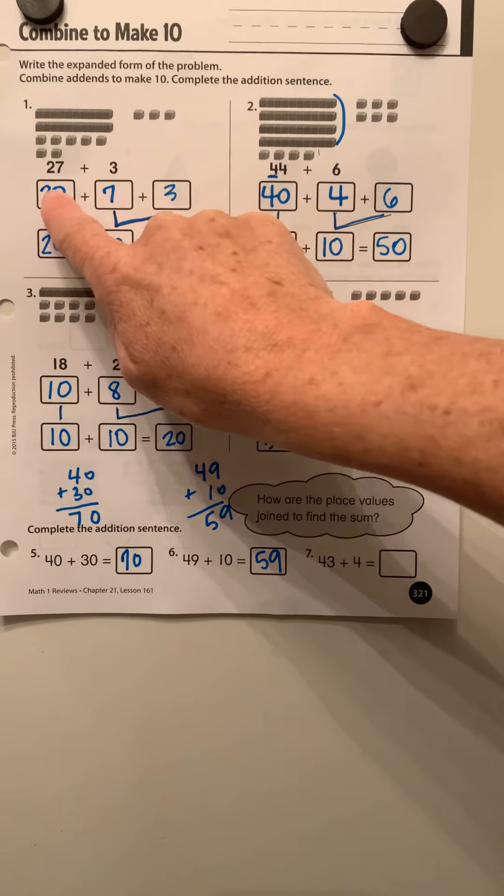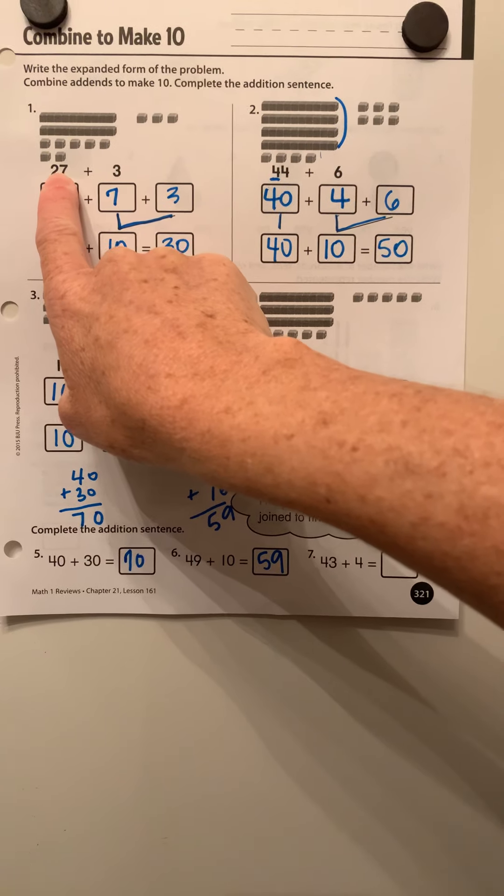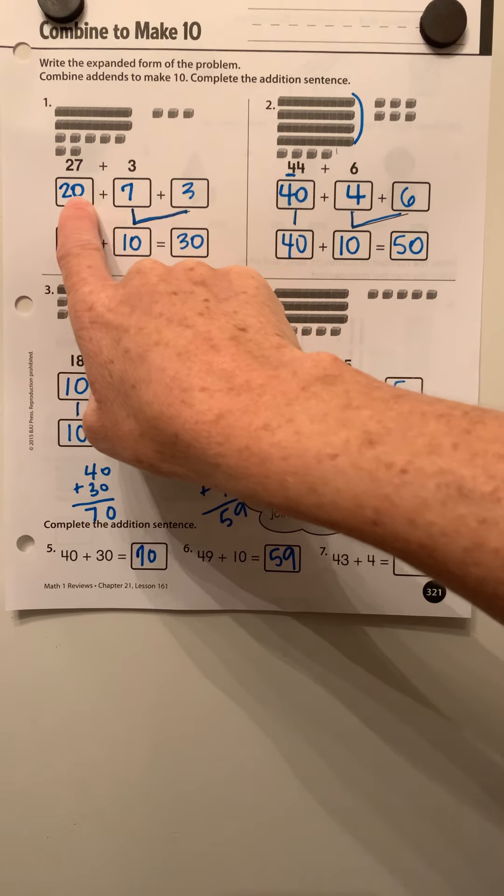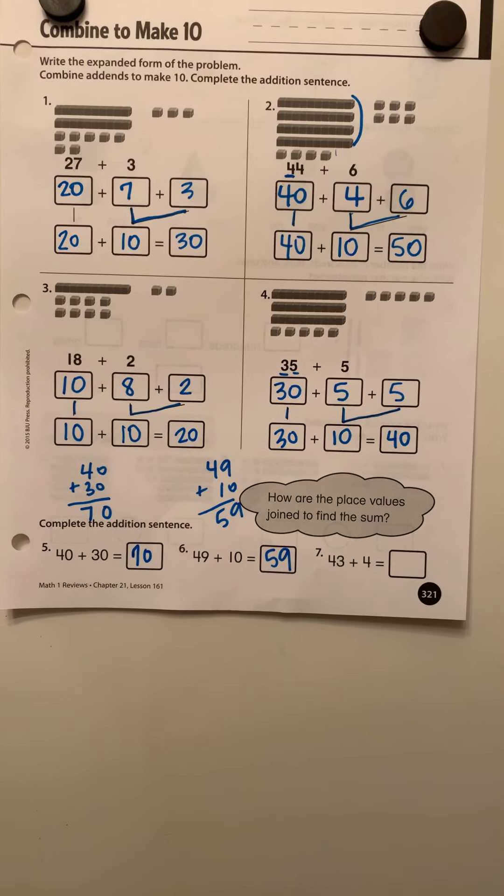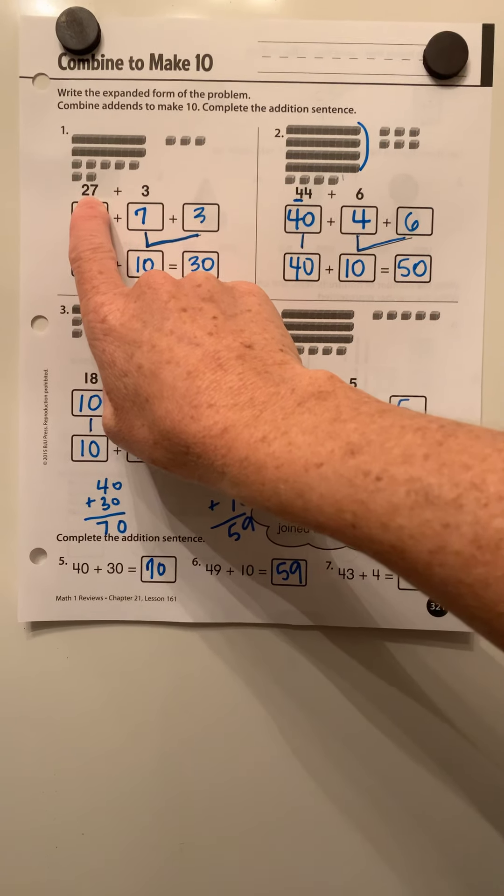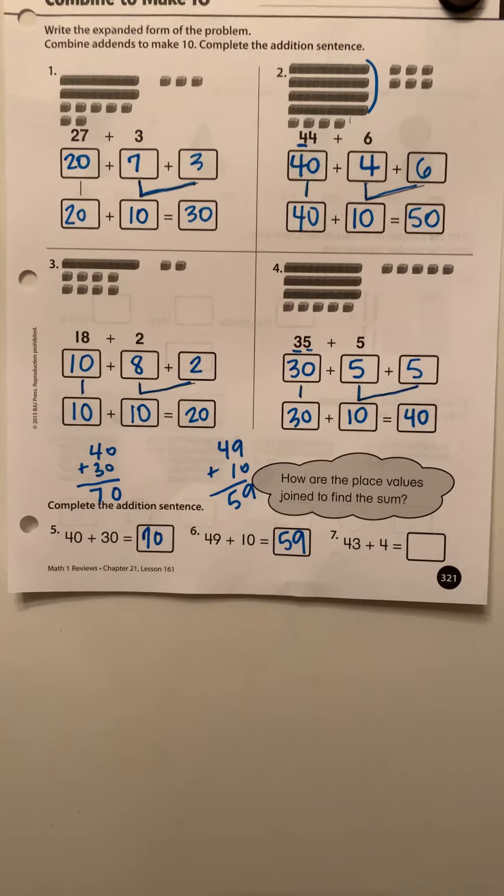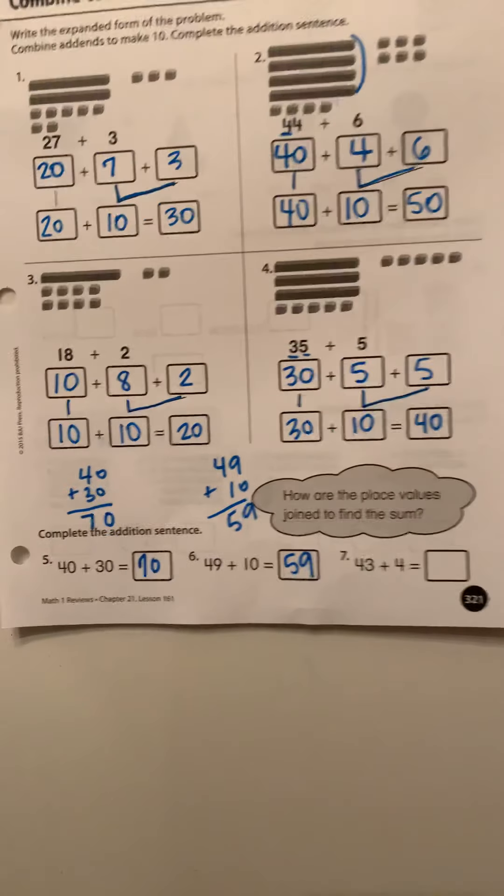Okay. And these first two boxes, these should always add together to give you this first number. So if you add these two together and you don't get the number you started with, like 27 right there, then something would be wrong there too. Okay.